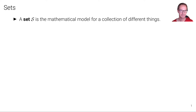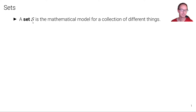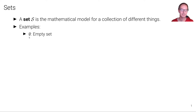A set S, which we often describe using this calligraphic notation here, is the mathematical model for a collection of different things. We use this symbol here — the strikethrough O symbol — to denote the empty set. That's a set without any things in it.